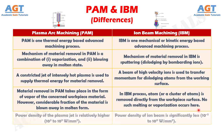Number 5: in plasma arc machining, the power density of the plasma jet is relatively higher — 10 to the power 2 to 10 to the power 3 watts per square millimeter — whereas in iron beam machining, the power density is relatively less — 10 to the power negative 10 watts per square millimeter.